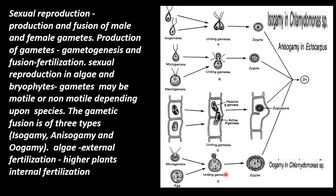In oogamy, micro gametes are male and macro gametes are female. One gamete is passive and another gamete is active; it enters the female gamete and a zygote or oospore is formed. Oogamy is also present in Chlamydomonas, and the zygote becomes diploid in nature.